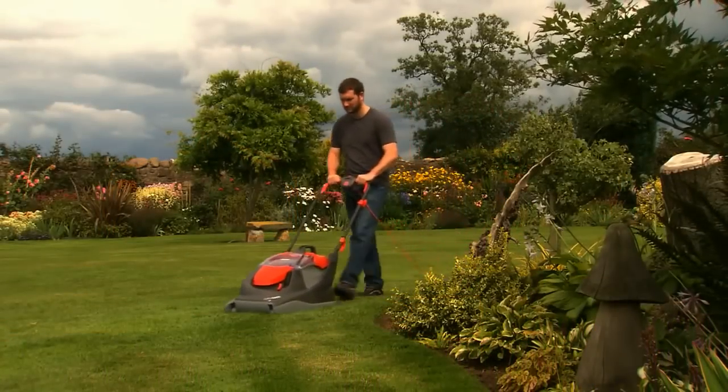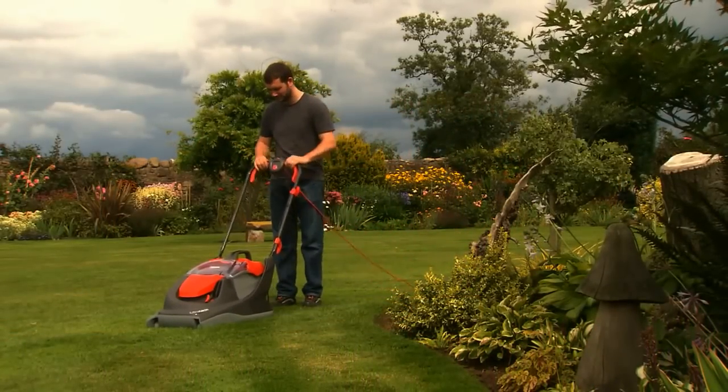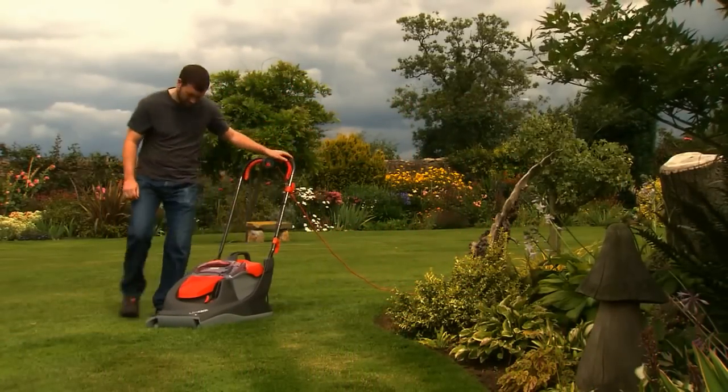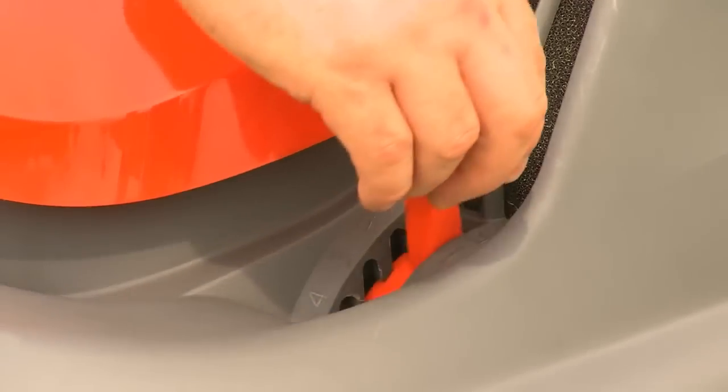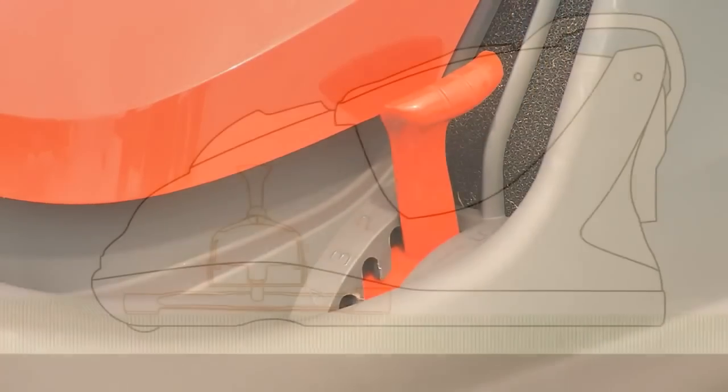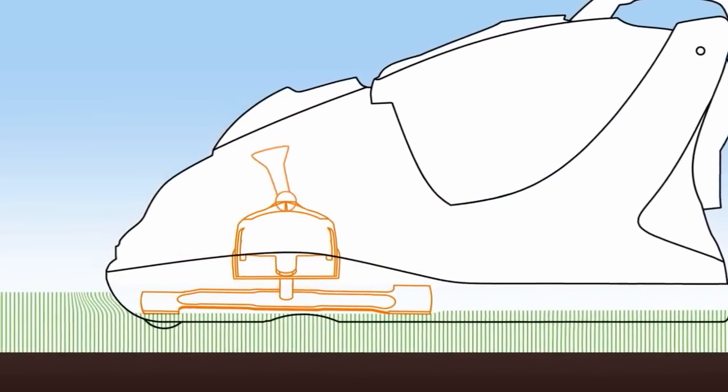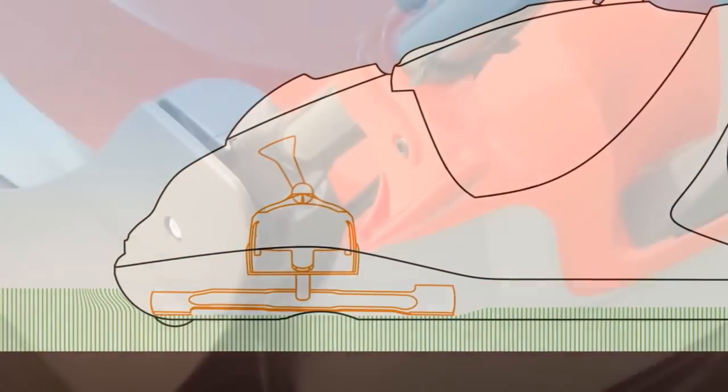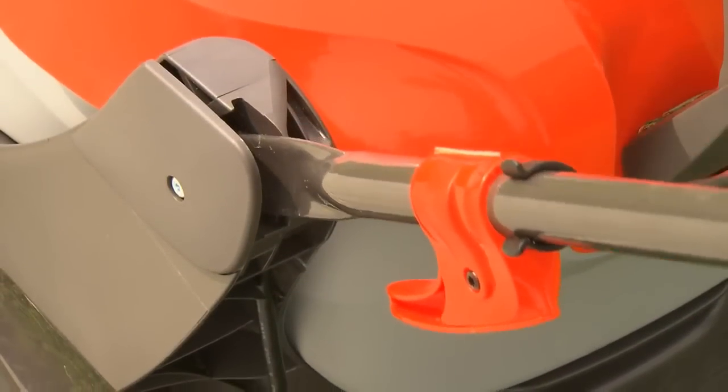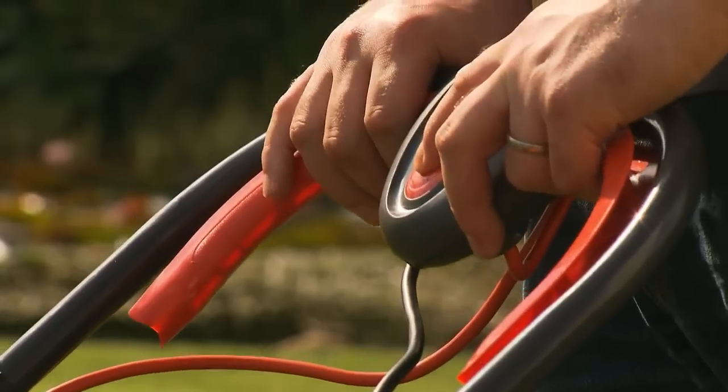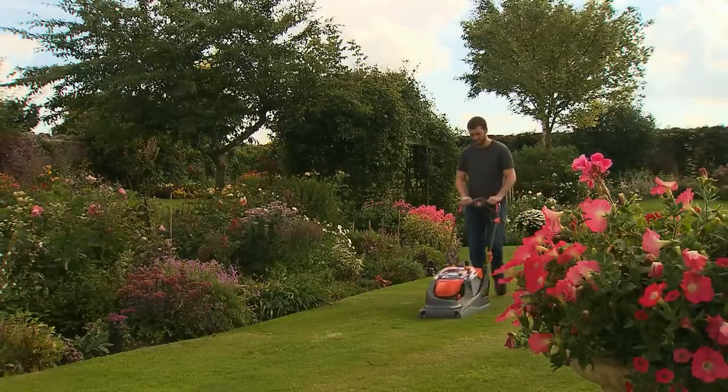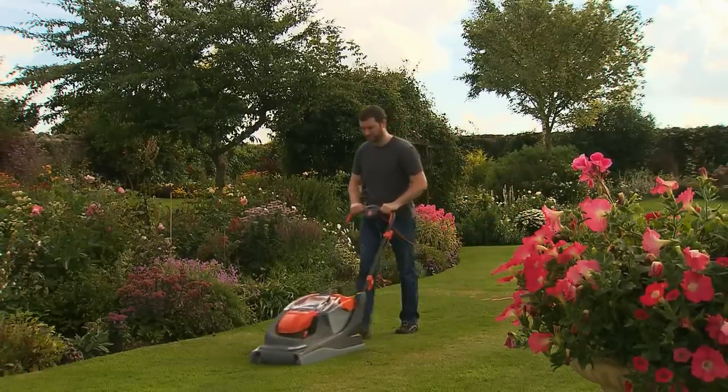We've made adjusting the blade height much easier on the UltraGlide with one straightforward central height adjustment lever. There's no need to waste time adding or removing spacers to reposition the blade. Simply move the lever to set the blade height. And because the handles of the UltraGlide are spring assisted, it's always ready to go. The grass will now be cut to your preferred length effortlessly.